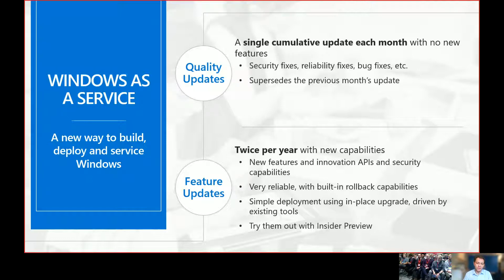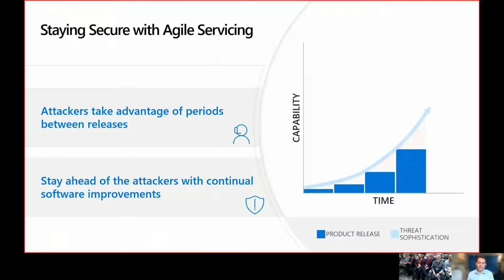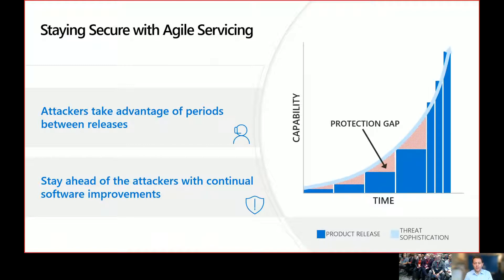Then we have feature updates, which come twice a year. They do introduce new capabilities, and you don't have to automatically deploy all those capabilities — you can choose when these things get deployed. The question sometimes gets asked: well, why are we doing that? If you think about the traditional three-to-five year update cycle, over time we have a gap between the sophistication of what the bad actors are doing and when Windows will get properly updated at an architectural level. By updating every six months, we shorten that timeframe quite significantly and we're able to keep the system much more secure, as well as introducing new features at a faster rate, which is what users expect in this mobile world.